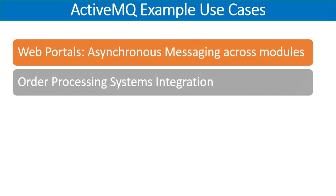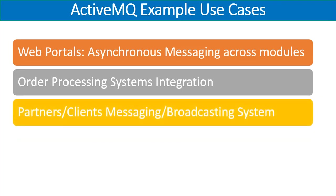The second example scenario is an order processing system with integration of different applications. An application receives orders from clients and pushes those orders to another system for processing and validation. After that, another system handles back-end processing, and you might have other platforms for shipment and payment handling — all integrated using ActiveMQ as a message broker.